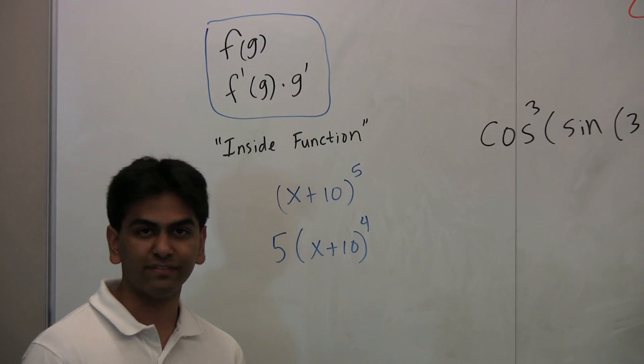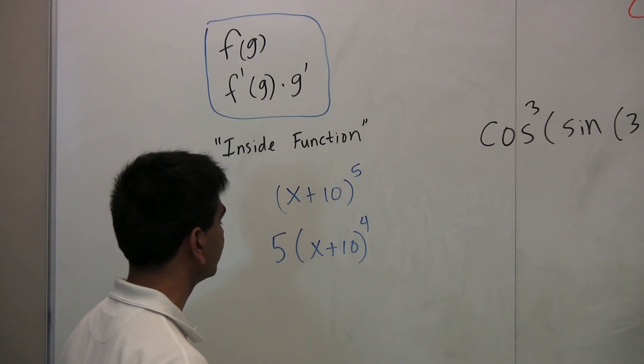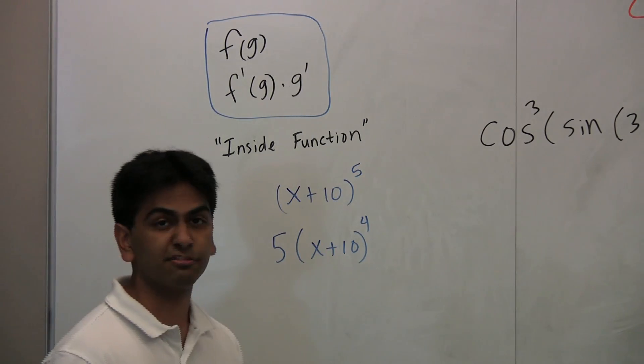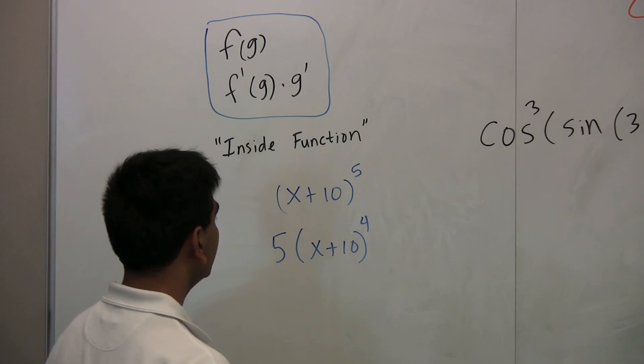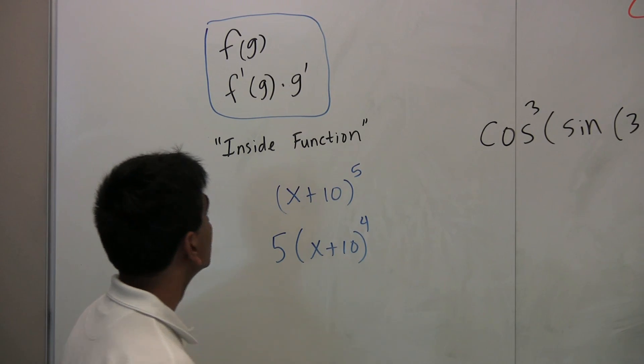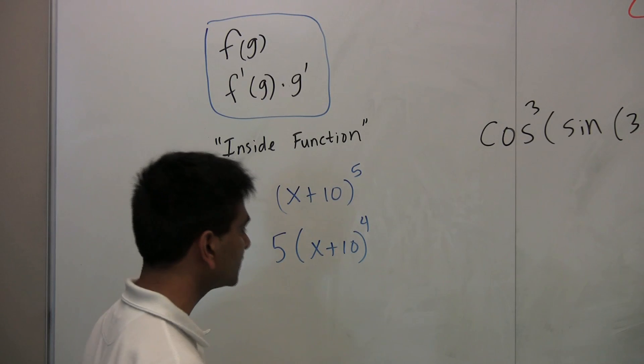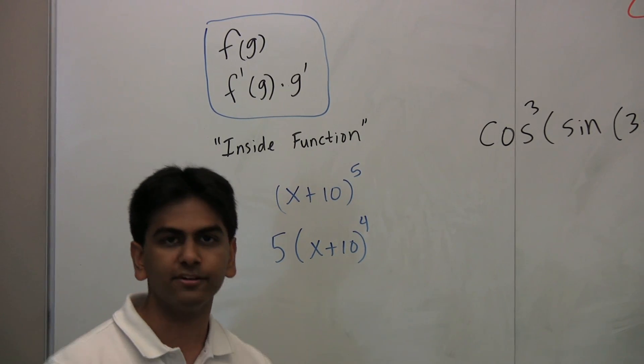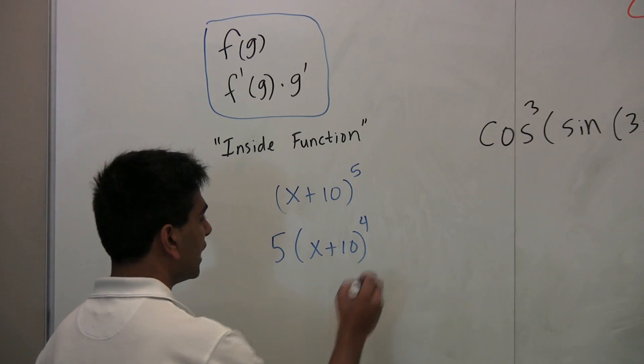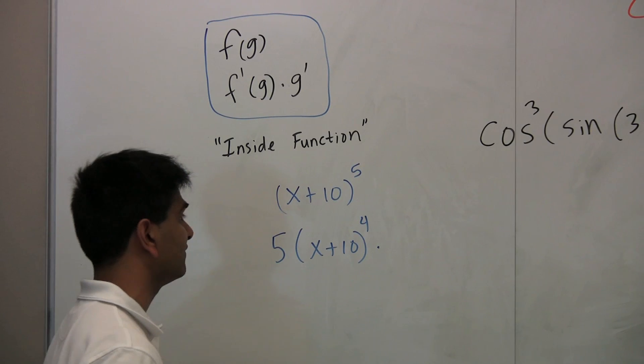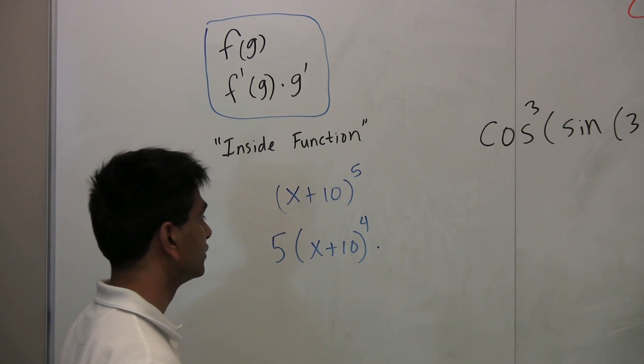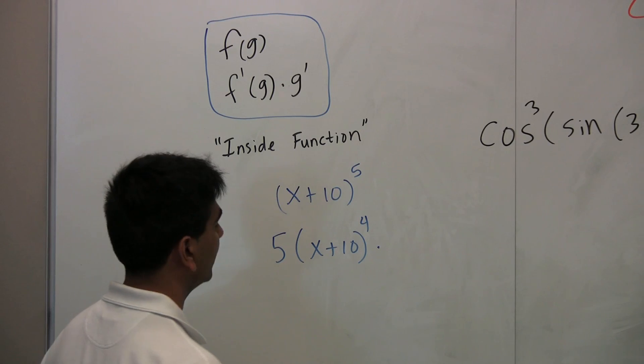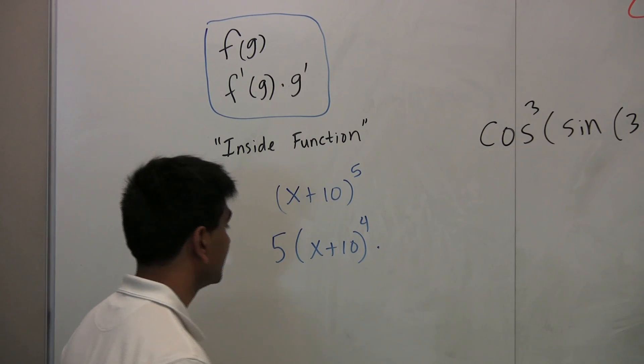So the way to do it is you first take the derivative of the outside function. So the derivative of smiley face to the fifth power is 5 smiley face to the fourth power. Now here's what the chain rule really means. What you have to do after this is multiply it by the derivative of the inside function. So now we're going to multiply it by the derivative of the inside function. What did we say the inside function was? x + 10. So the derivative of x + 10 is just 1. So this will just really be this.